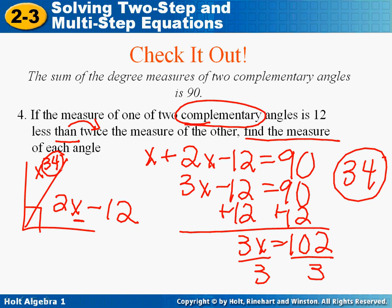But notice it asks you to find the measure of both angles. Your second angle, you're going to plug in 2 times 34 minus 12, or you could simply subtract from 90. And that final answer is 56. So your two solutions are 34 and 56.